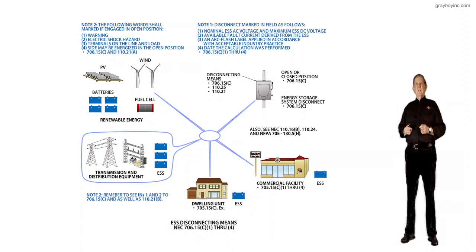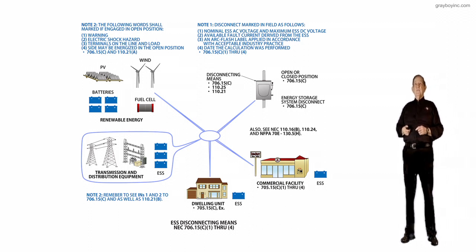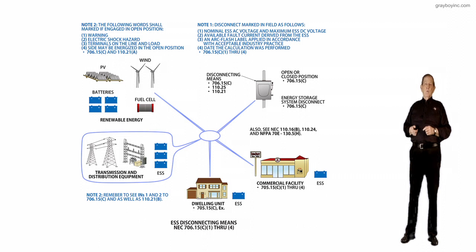Then review the notes. Note one talks about the disconnecting means. And it says the disconnecting means shall be - that means it's mandatory. Number one bullet has to be readily accessible, 706.15A, as in Apple, 1.